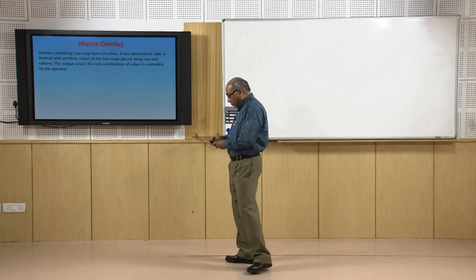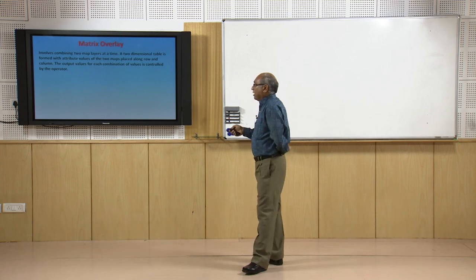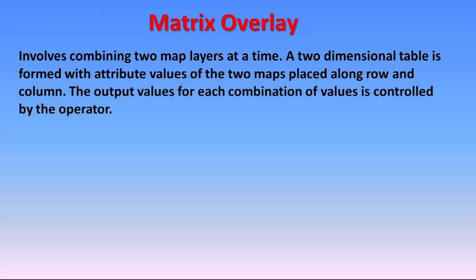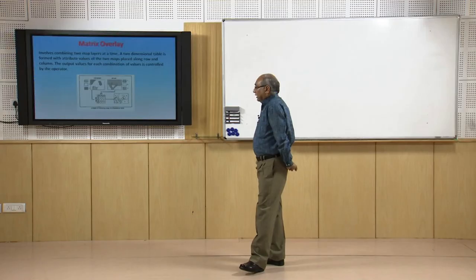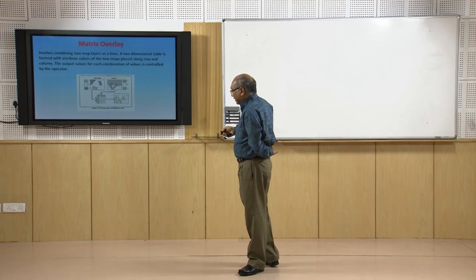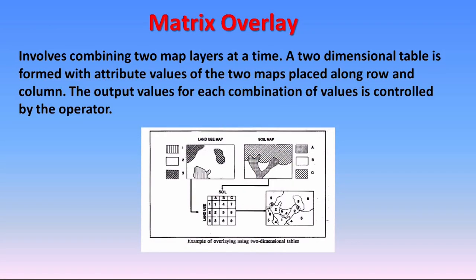Matrix overlay involves combining two maps at a time. A two-dimensional table is formed with attribute values of the two maps placed along rows and columns, and the output value of each combination is controlled by the operator. For example, with a land use map and soil map having attributes A, B, C and 1, 2, 3 respectively, you end up with a similar output map. Developing this two-dimensional table beforehand makes it much easier to think through the overlaying operations before submission.